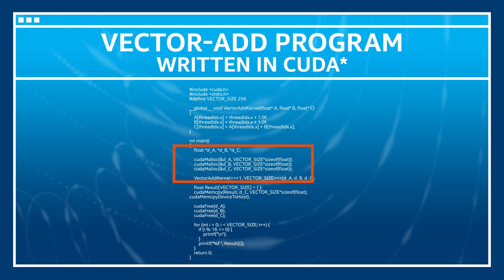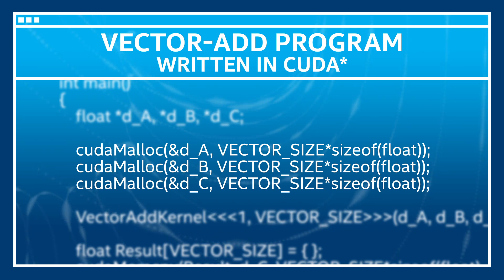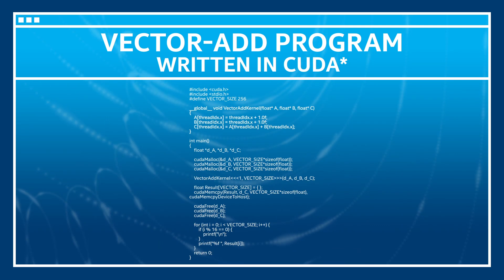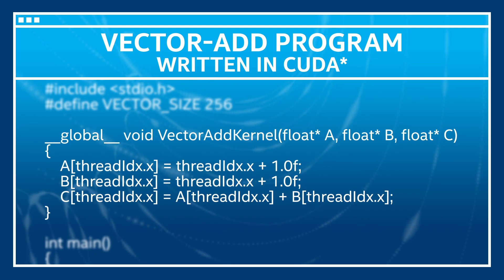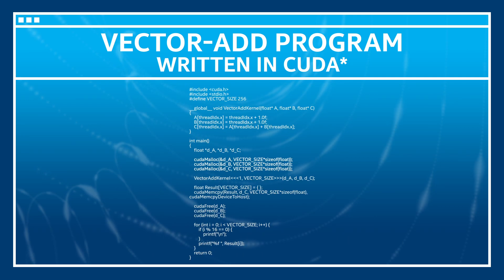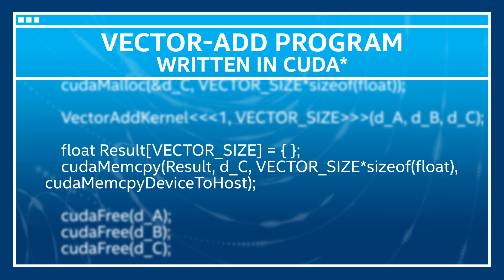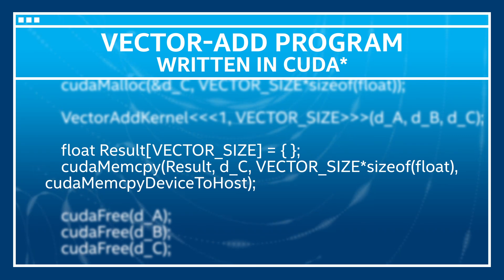Here is a vector add program written in CUDA. We can see that it allocates three float vectors DA, DB, and DC on the graphics device, runs a vector add kernel which performs the addition of DA and DB and stores the result in DC. In order to access the result on the host CPU, a memory copy is performed to transfer the result from the device to the float vector allocated on the host.